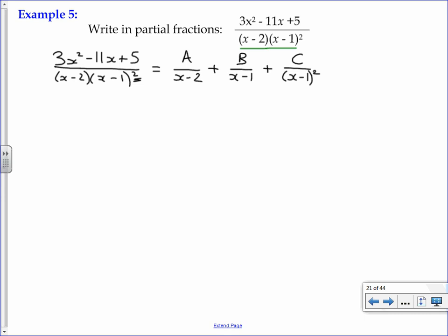So having done that, I now have the template of what my solution is going to look like. I just need to then find the correct values for A, B, and C. We do that by multiplying by the denominator, of course, as we have done in the past. So we want to multiply everything on both sides by x minus 2 multiplied by x minus 1 all squared. So on the left-hand side, as usual, that cancels out, and we're left with the numerator, 3x squared minus 11x plus 5.